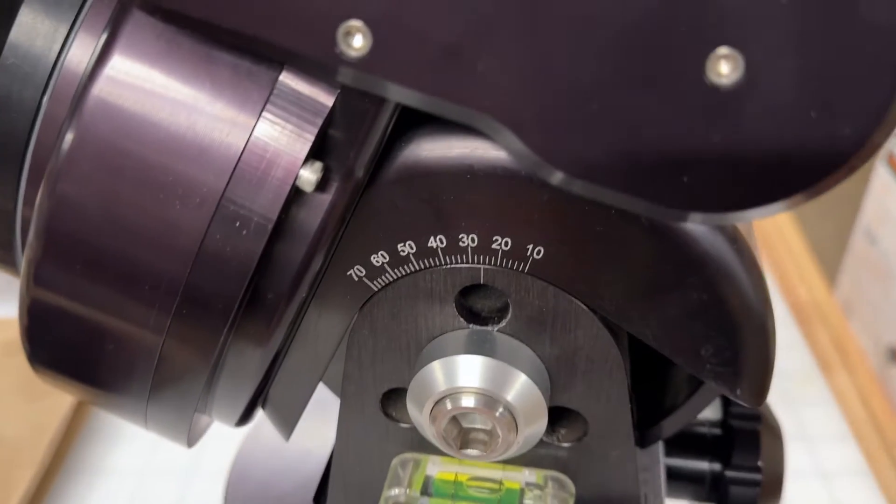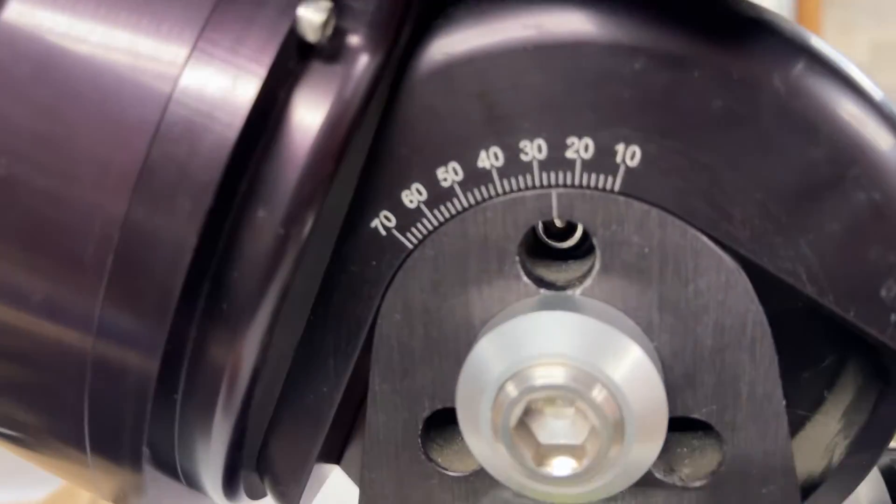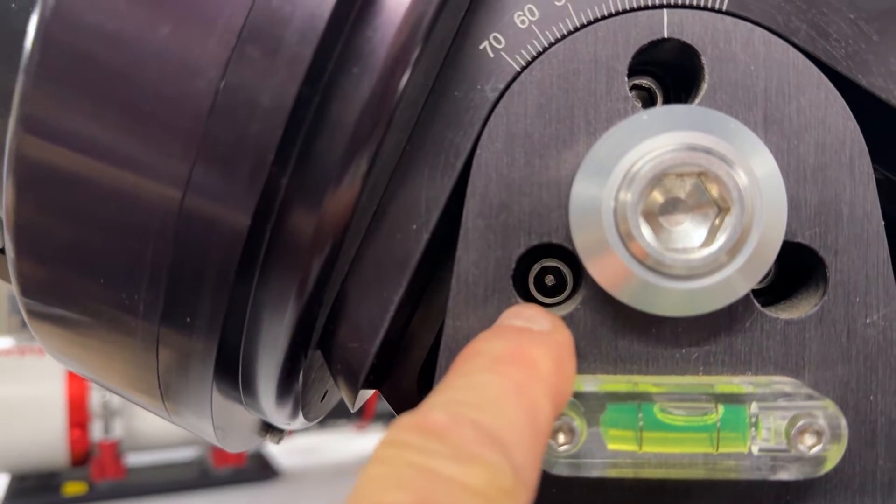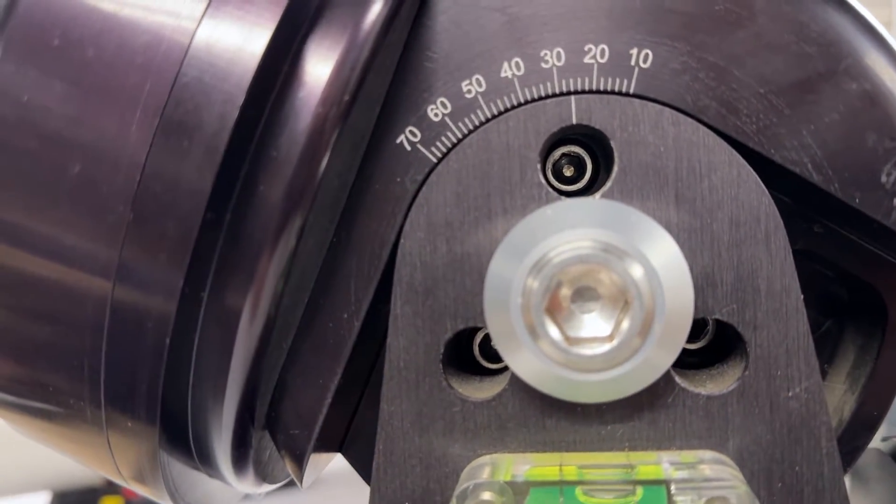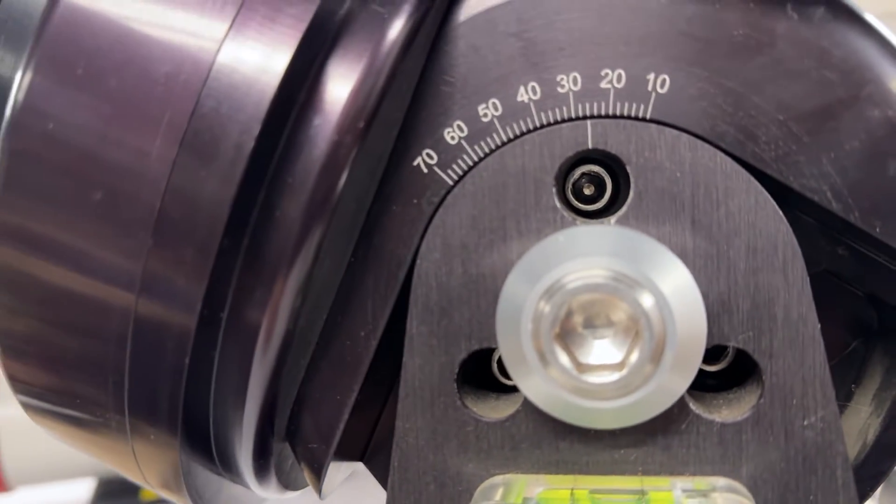But the way to do this is you'll see in here there are three screws and they're actually three on each side of this mount, this RA axis here.